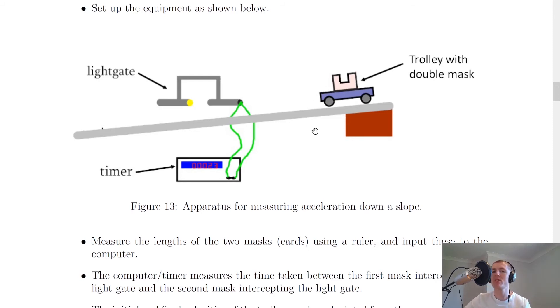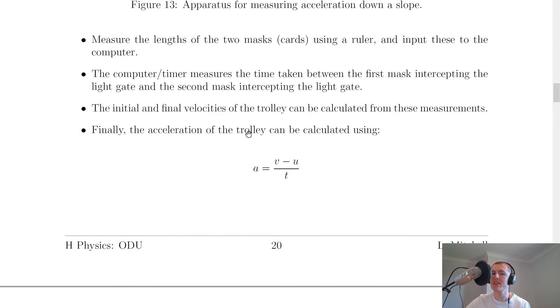And then it also measures the time taken for the mask at the back to pass through the light gate as well. Those two separate times are going to give us our initial and our final velocities. It then says finally the acceleration of the trolley can be calculated using a equals v minus u over t.